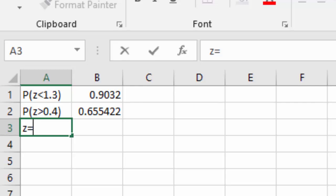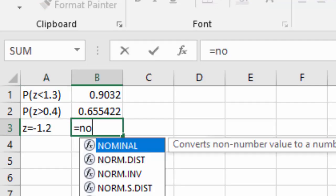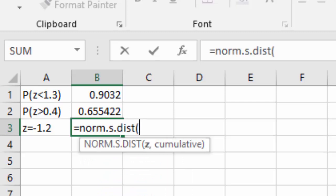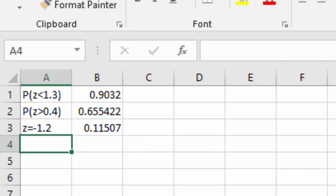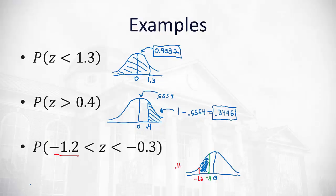Let's see what happens when we look up those values. First, if z is equal to negative 1.2, we can say equals norm.s.distribution. The z value is negative 1.2, true. We get an area of 0.1151. So we have 0.1151 is the area to the left. That's not the area we want. That's just the area to the left of negative 1.2.